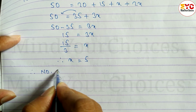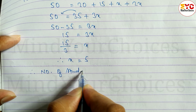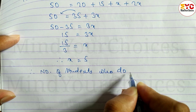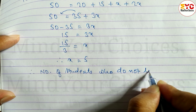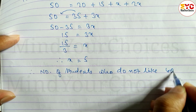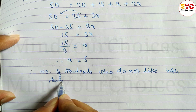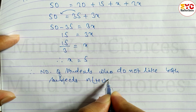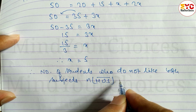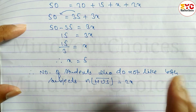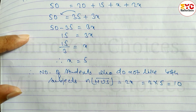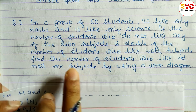Therefore, the number of students who do not like both subjects — that is n(M∪S)' — is equal to 2x. Substituting x = 5, we get 2 × 5 = 10.